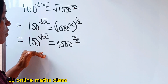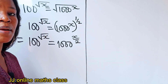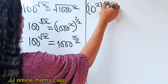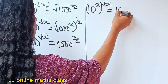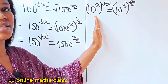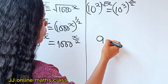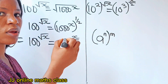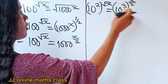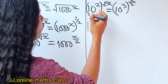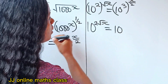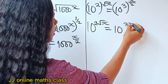Now let's put them in the same base. We'll have 10 to the power of 2, raised to the power of root x, is equal to 10 to the power of 3, raised to the power of x over 2. Using the rule that a to the power of n raised to the power of m equals a to the power of n times m, the left side becomes 10 to the power of 2 root x, and the right side becomes 10 to the power of 3x over 2.